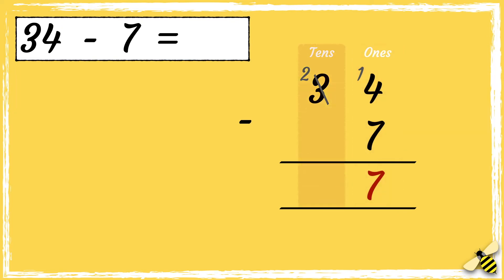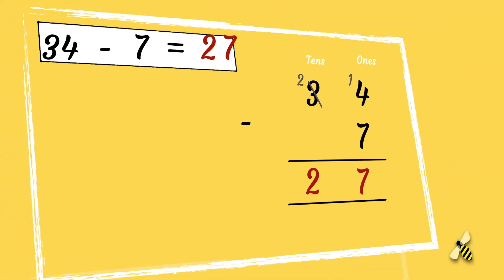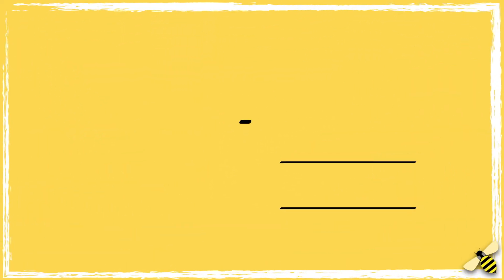Now we need to subtract the digits in the tens column, so we have two take away zero, which is two. So we have two tens and seven ones, so the answer is 27.